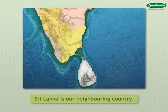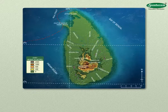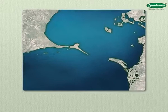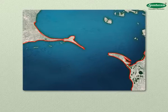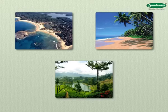Sri Lanka is a neighboring country located near the southern coast of India. It is an island, separated from the Indian mainland by the Palk Strait. There is a series of rocky islands from the southern coast of India up to the coast of Sri Lanka, called Adam's Bridge or Rama Setu. On account of its beautiful natural scenery, Sri Lanka is called an emerald island.